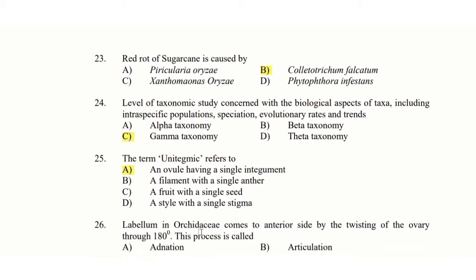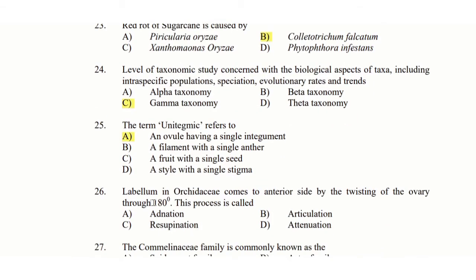26th question: Labellum in Orchidaceae comes into the anterior side by twisting of the ovary through 180 degrees, and this process is called — option A: adenation, option B: articulation, option C: resupination, option D: attenuation. The answer is option C: resupination.